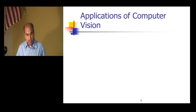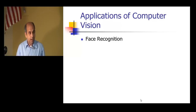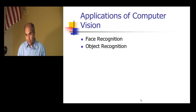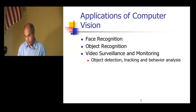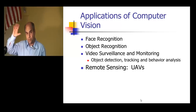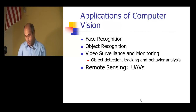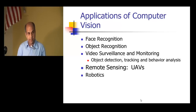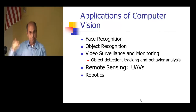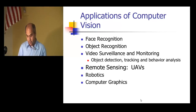There are lots of applications of computer vision, including face recognition which is a biometric already being used at airports; object recognition; video surveillance and monitoring; remote sensing — drones taking videos and analyzing scenes to make decisions; robotics where vision is one of the main sensors; and computer graphics. I'm going to go quickly through some examples, most of which are work from our lab.